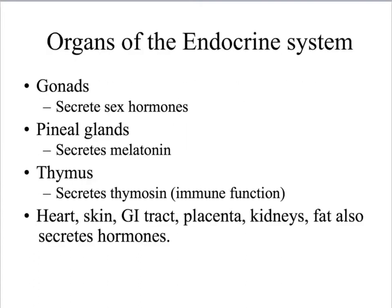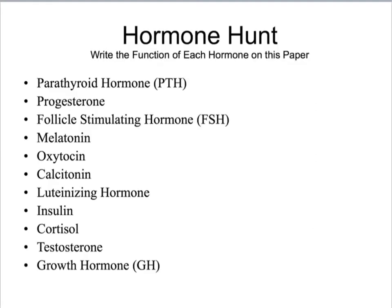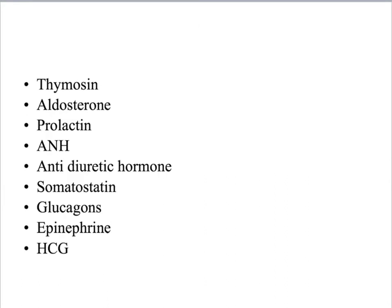The organs of the endocrine system include the gonads, which secrete sex hormones; the pineal gland, which secretes melatonin; the thymus, which secretes thymosin and has immune function; and the heart, skin, GI tract, placenta, kidneys, and fat also secrete hormones. We're going to go through each of these in class and learn what each one does.